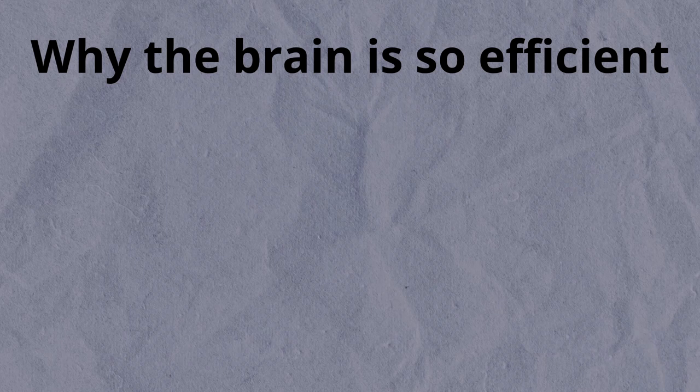The human brain is proof positive that general intelligence can exist in a system which is small and dissipates only 12 watts of energy. While machine learning has taken off into the realm of the largest, most power-hungry computers in the world, let's look at how the brain achieves its remarkable efficiency. I attribute it to three factors.